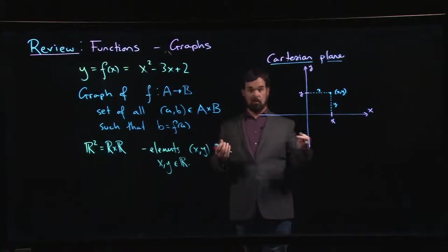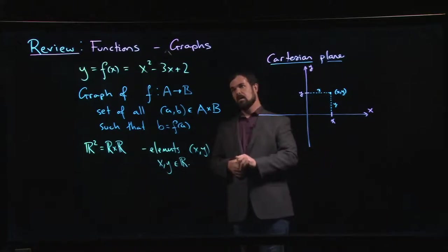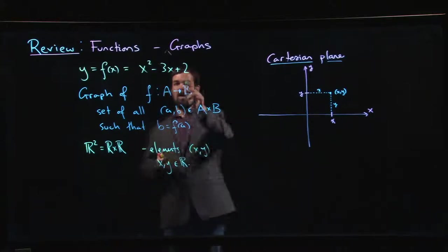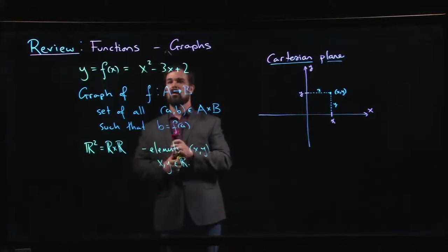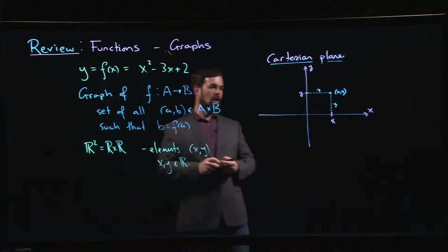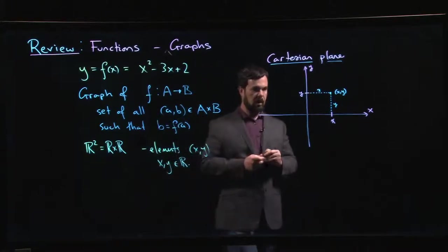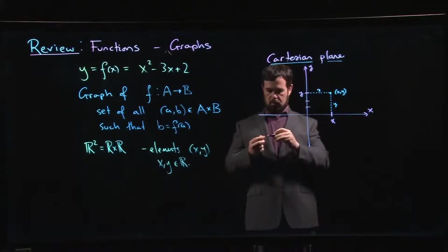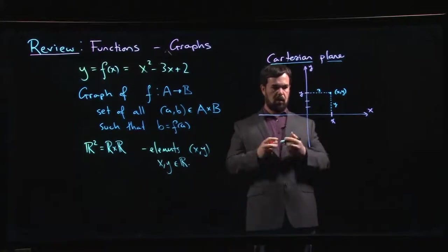The most elementary thing that you can do here is you can just start choosing x values and seeing what the corresponding y value is. We could go through and say when x equals zero, y is equal to two. I mark off one, two and I plot a point.